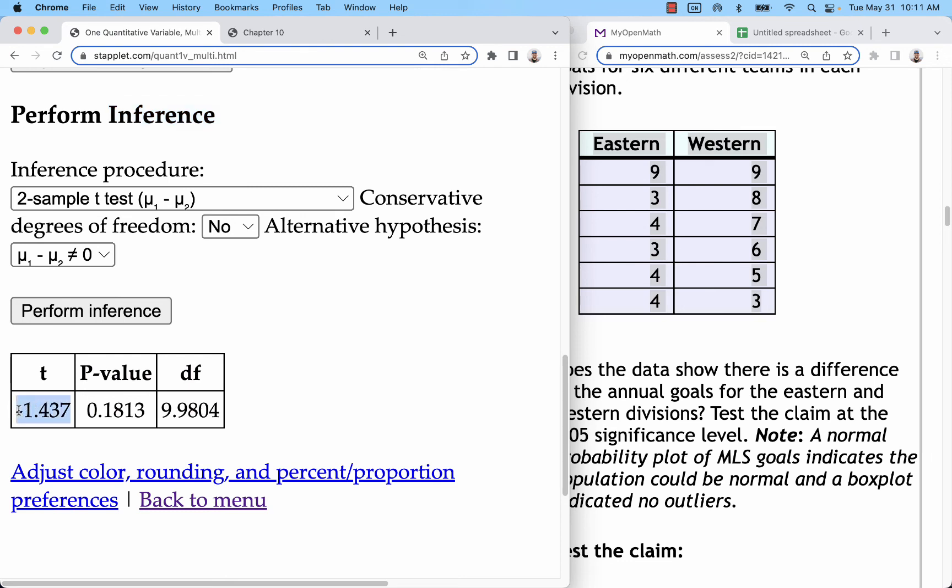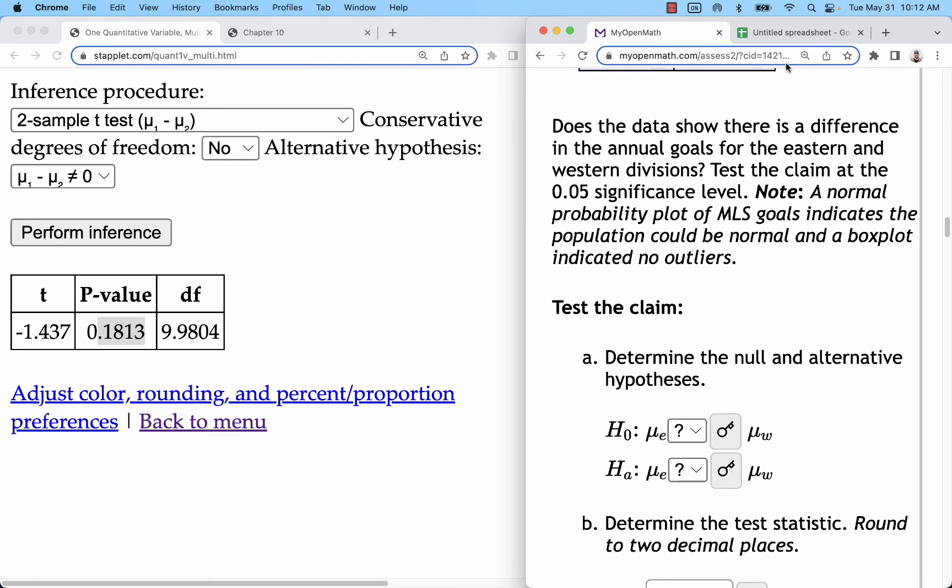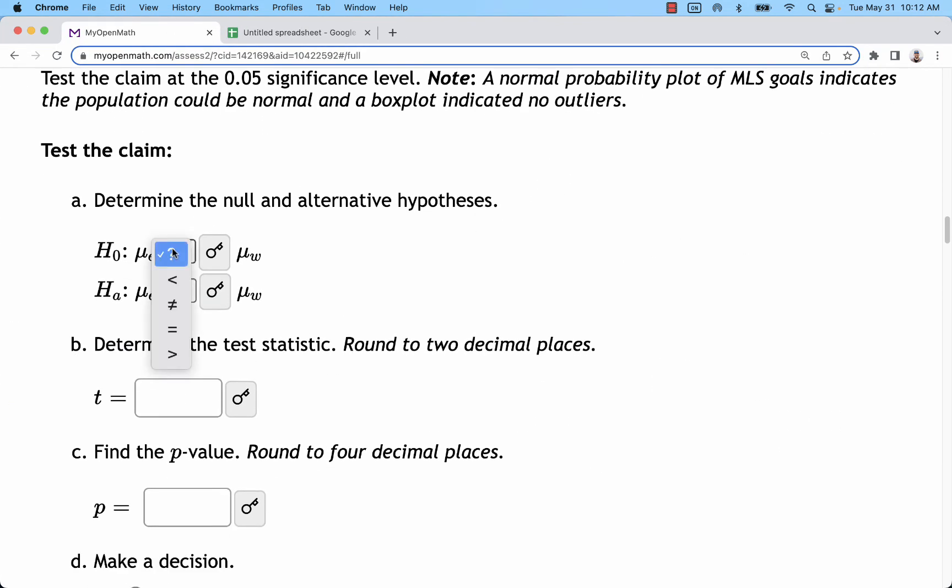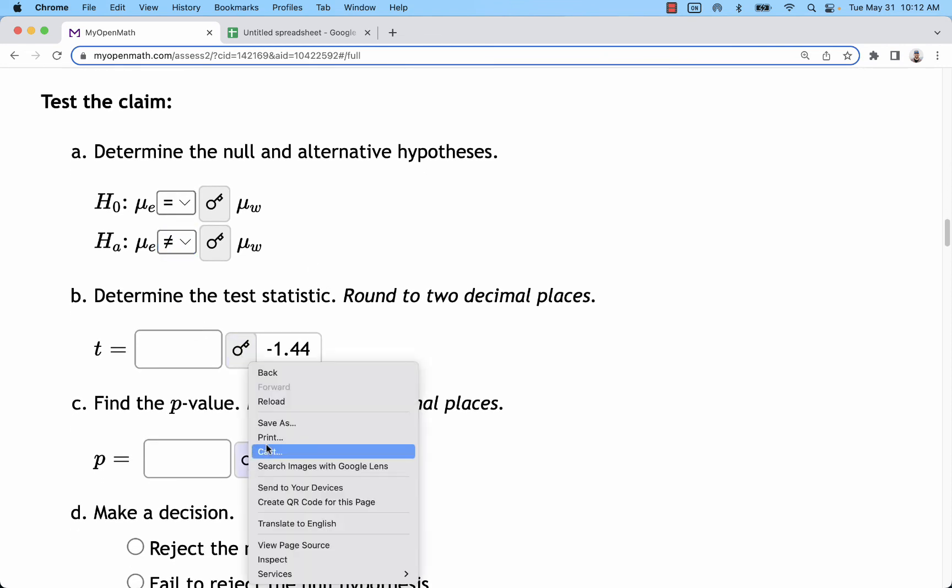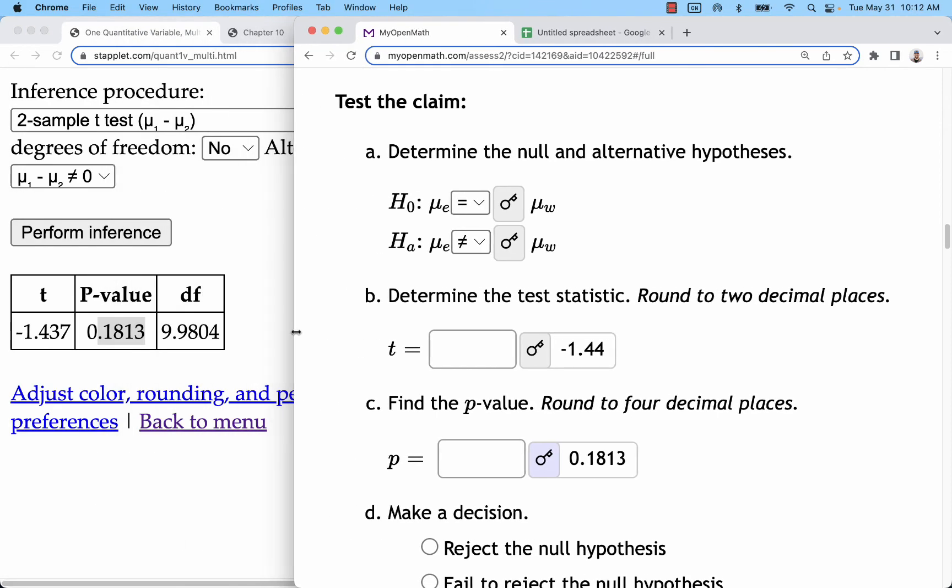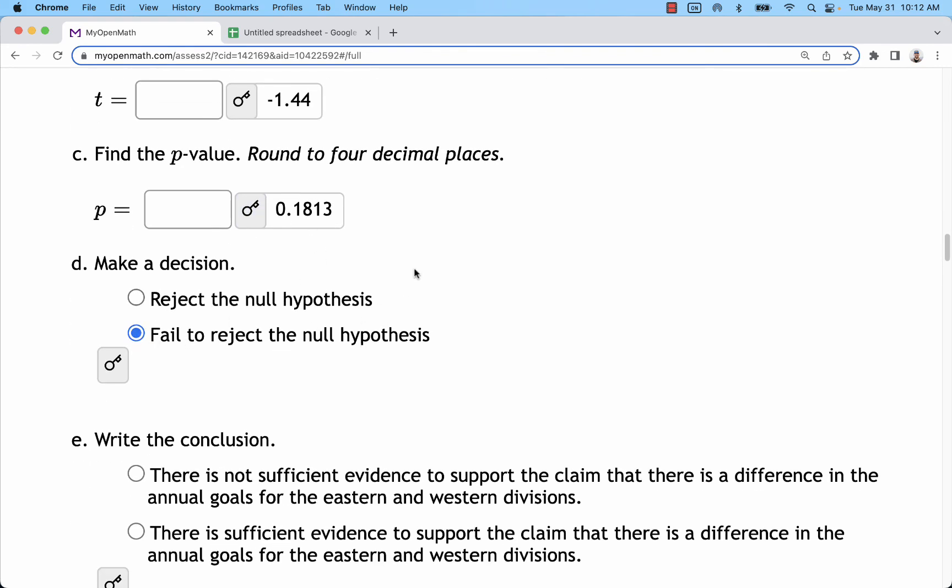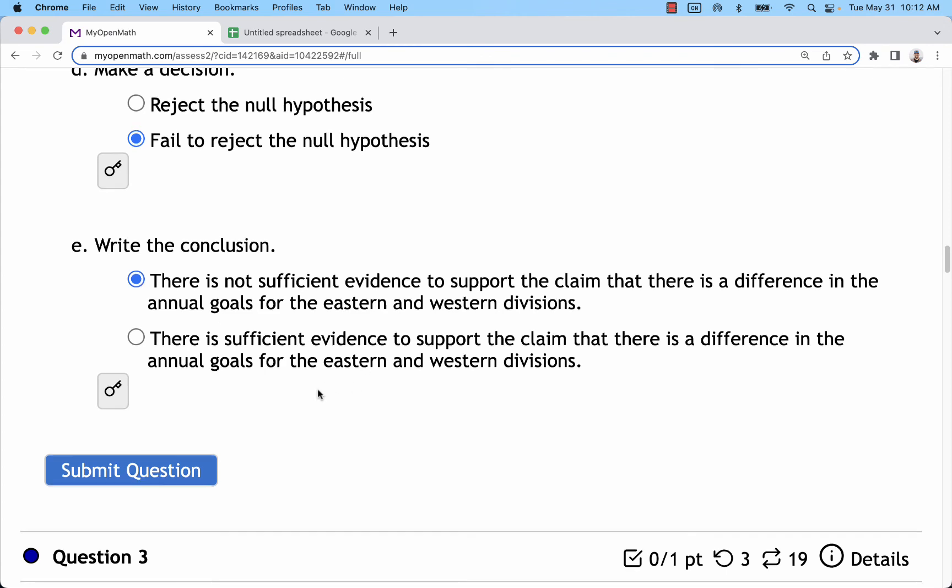We do end up with a population mean one below population mean two for our t-test statistic. That's a negative 1.4. So 1.4 standard deviations to the left, p-value of about 18 percent, which is more than the alpha. And so kind of relating that back here, we have eastern is equal to western for the null. We have eastern is not equal to western for the alternative. There's our test statistic and our p-value, which come from Statlet over there. Again, this one's another fail to reject because the p-value is more than alpha, and we're going to have not sufficient evidence on that one.